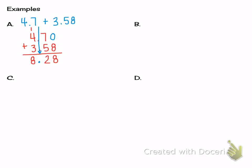All right, let's move on to the next example. B is going to be a subtraction problem. If I give you 48 and 17 hundredths minus 5 and 6 tenths, try that one out and we'll see how you did.